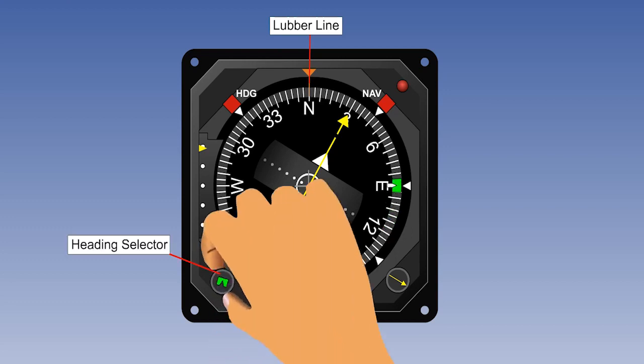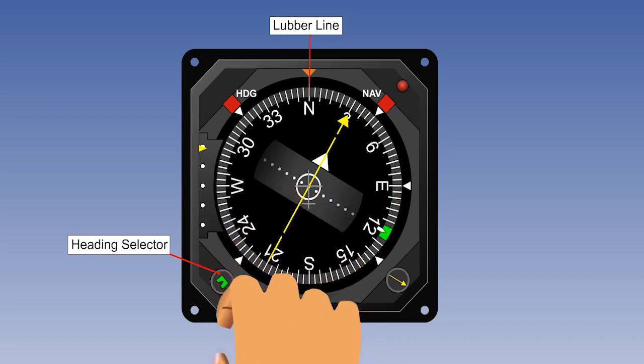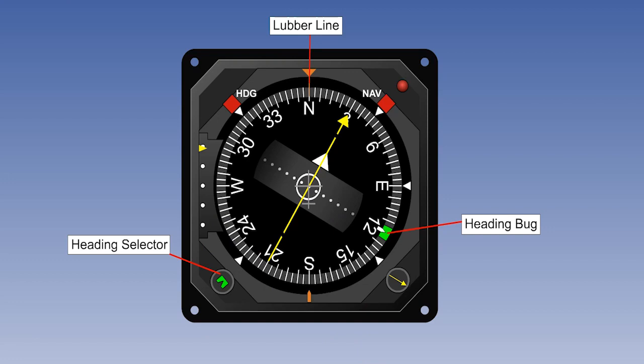A desired heading can be selected by the pilot by rotating the heading selector control. The heading select marker, usually called a bug, indicates the selected heading. If the magnetic input from the flux valve fails, a warning is given in the form of a heading warning flag.